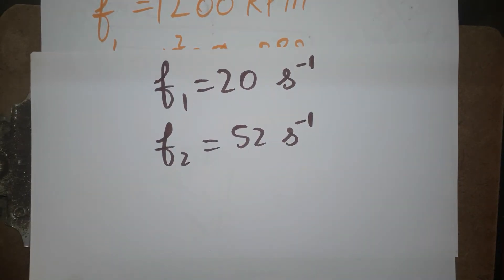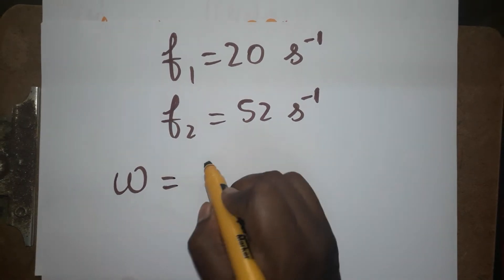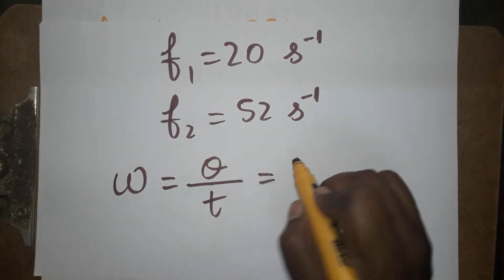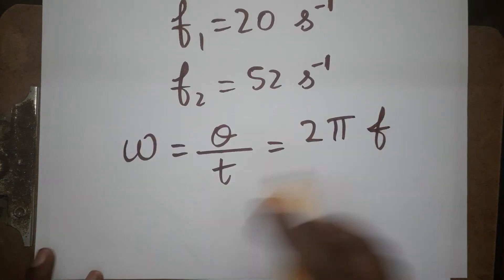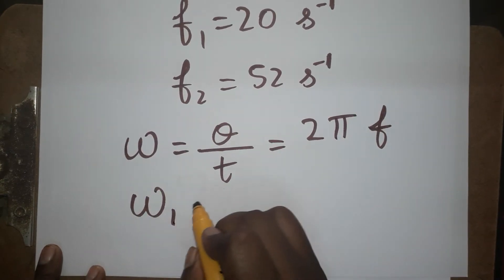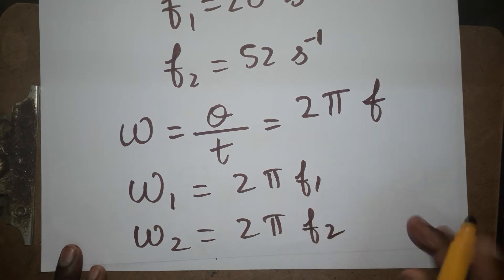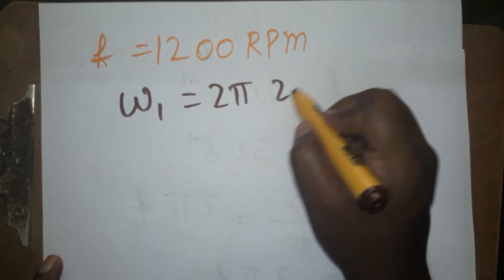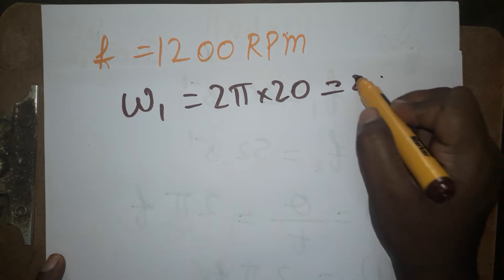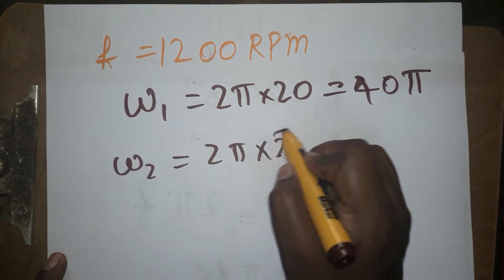Now we are going to find angular acceleration. Before that we need to find angular velocity. Angular velocity ω equals 2πf. For the initial angular velocity: ω1 = 2π × f1. We found f1 = 20, so ω1 = 40π. For the final angular velocity: ω2 = 2π × f2 = 2π × 52.